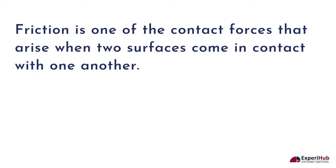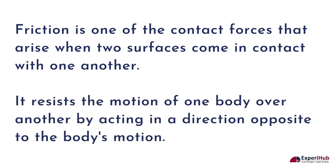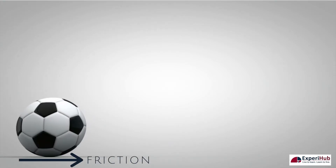What is friction? Friction is one of the contact forces that arise when two surfaces come in contact with one another. It resists the motion of one body over another by acting in a direction opposite to the body's motion. When a ball is moving on a flat surface and there is no external force acting on it, the ball comes to a halt — this is because the force of friction is acting in the opposite direction.